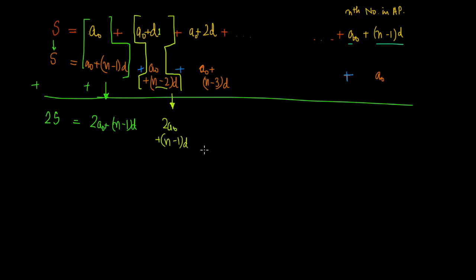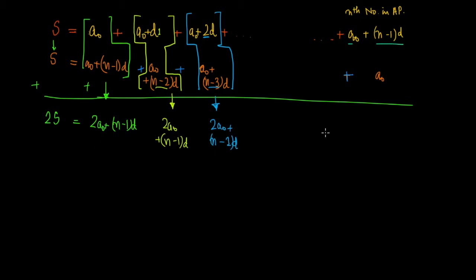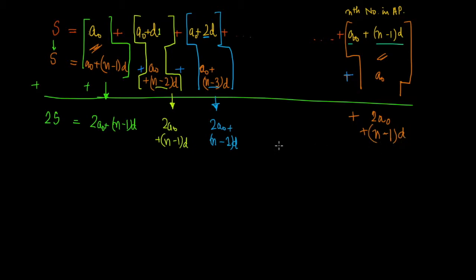We verify this holds for every pair. For the next pair, a₀ appears twice, and the D coefficient is (n−3) + 2 = (n−1), giving a₀ + (n−1)D again. Every corresponding pair of terms from the forward and reversed series sums to the same value: 2a₀ + (n−1)D.